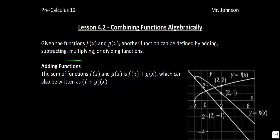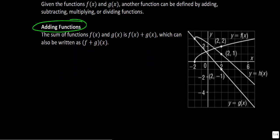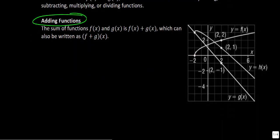Let's start with adding functions. When we're trying to find the sum of f(x) and g(x), we can write it as f(x) plus g(x), which can also be written in another format. Looking at the given functions on the right-hand side, we have f(x), g(x) — a linear function — and then this new combined function h(x) formed from their sum.